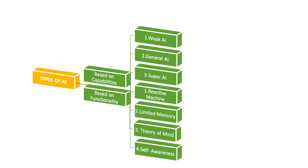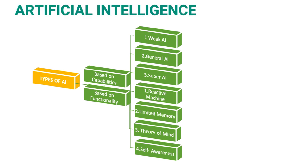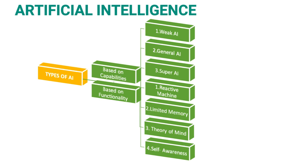Next topic is Types of AI. AI is of two types: based on capabilities and based on functionalities. Based on capabilities, there are three types: Weak AI, General AI, and Super AI. Weak AI can perform a dedicated task only. General AI can perform any task with efficiency like a human. Super AI is a level of intelligence at which machines could surpass human intelligence and perform any task better than a human.